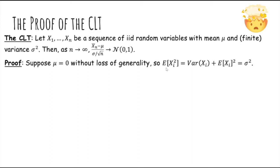So in general, E[Xi²] is just the variance of Xi plus E[Xi]² by the property of variance. But because we assume that the mean is zero, E[Xi] is zero, so this term goes away and we're just left with variance of Xi, which is σ².